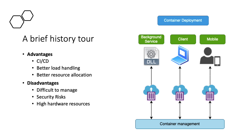The disadvantages of container deployment include management complexity — there is a learning curve to understand how container management works, its structure, how to deploy it, and the main configuration. The second disadvantage is security risks: if not set up correctly, it can lead to information leakage, because with Kubernetes specifically, information stored in container deployments must be stored in the right place.